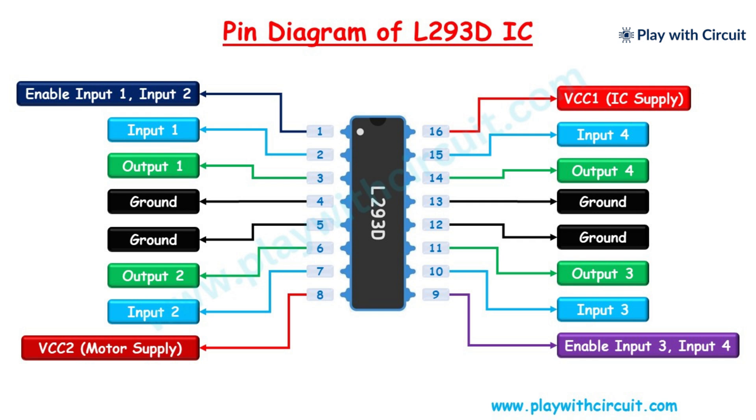This pin is connected to the ground. Pin 8 and pin 16 are the voltage pins. Pin 16 provides power to the IC, so this pin should be connected to 5 volts.